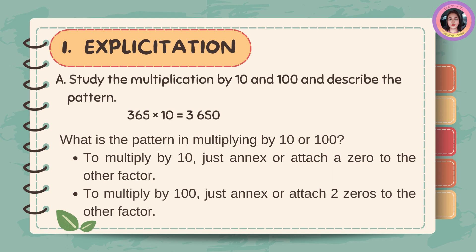Study the multiplication by 10 and 100 and describe the pattern. 365 times 10 is equal to 3,650. What is the pattern in multiplying by 10 or 100? To multiply by 10, just annex or attach a 0 to the other factor. To multiply by 100, just annex or attach two 0s to the other factor.